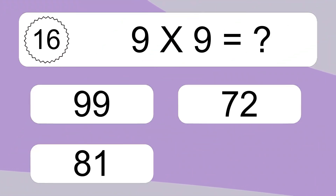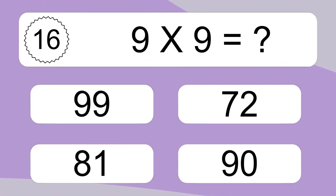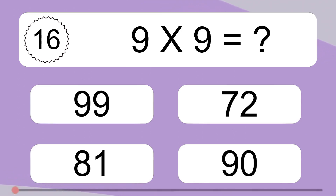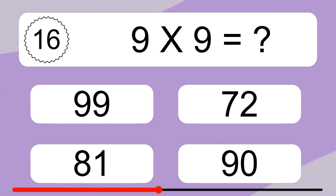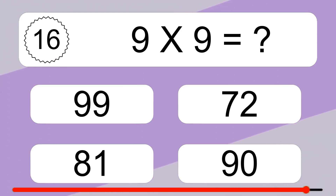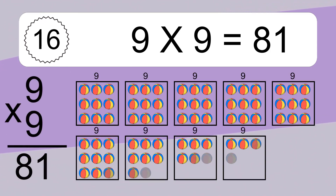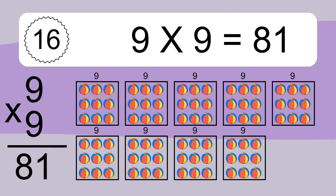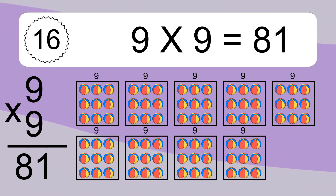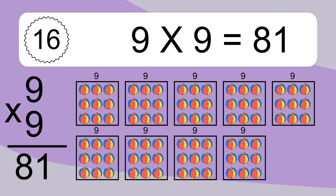9 times 9 equals what? 9 times 9 equals 81.